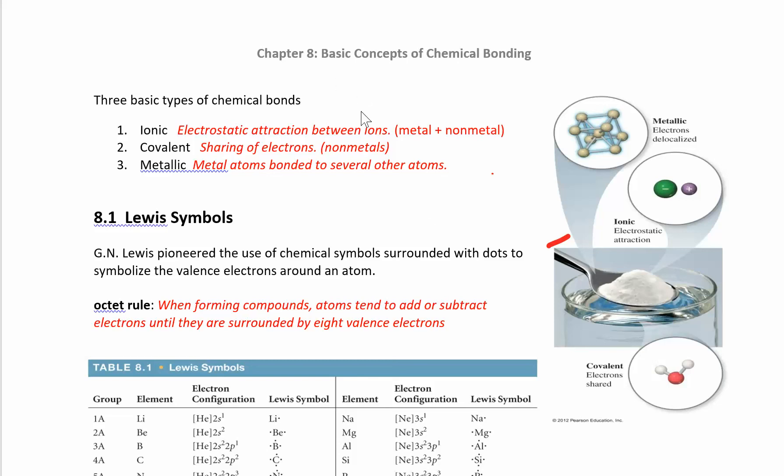In Chapter 8, we're going to look at basic concepts of chemical bonding, and there are three types of bonds. Ionic is the first one. It's when you have a metal and a non-metal. We've talked about this before and named these different kinds of compounds. So ionic compounds have ionic bonds.